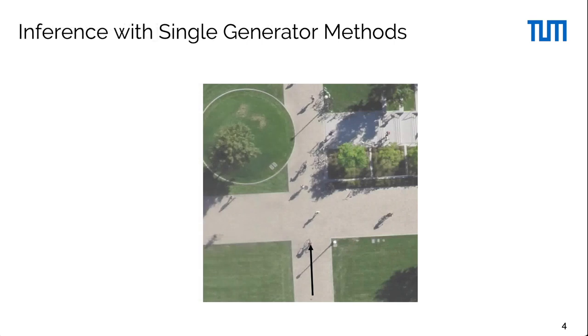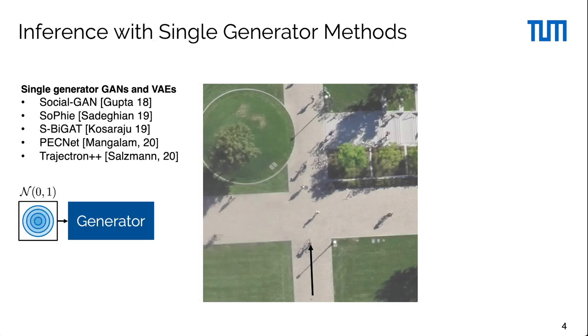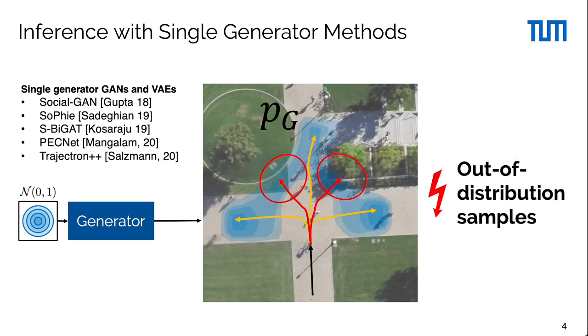Current state-of-the-art methods learn a multimodal distribution with single-generator models that map a continuous latent space to the desired target distribution conditioned on the input. We find that these models assign a non-zero probability to regions that have no support in the ground truth distribution and therefore predict so-called out-of-distribution samples.